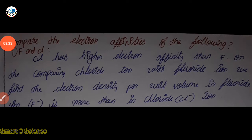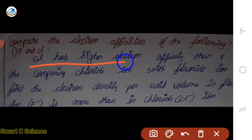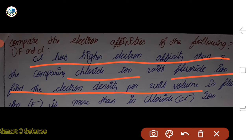If you compare fluorine with chlorine, you can compare their electron affinities. Fluorine has 3 lone pairs and a small atomic size, causing electron-electron repulsion. Therefore, chlorine has a greater electron affinity than fluorine. That means chlorine is greater than fluorine in electron affinity.